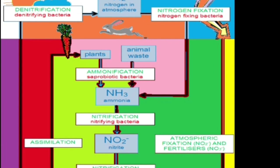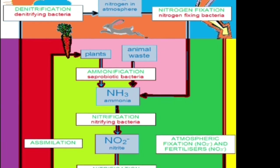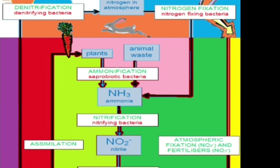The nitrogen returns to the atmosphere. Also, animals have to eat the plants. The animal either dies or produces waste. Another type of bacteria, along with decomposers, breaks down this nitrogen from either the waste or the dead animal. By the process called ammonification, nitrogen can enter the cycle once again, and the cycle continues.